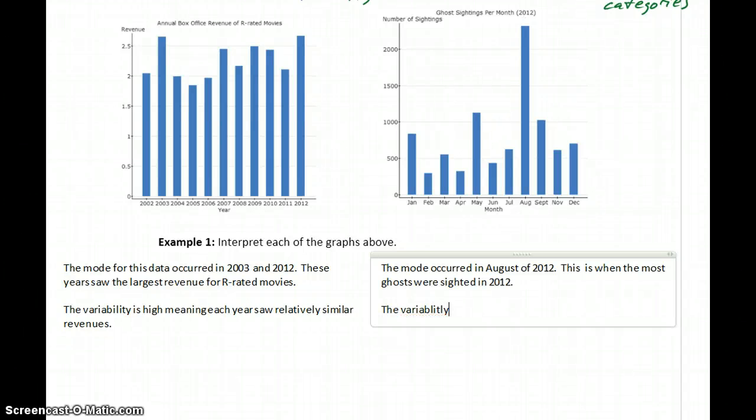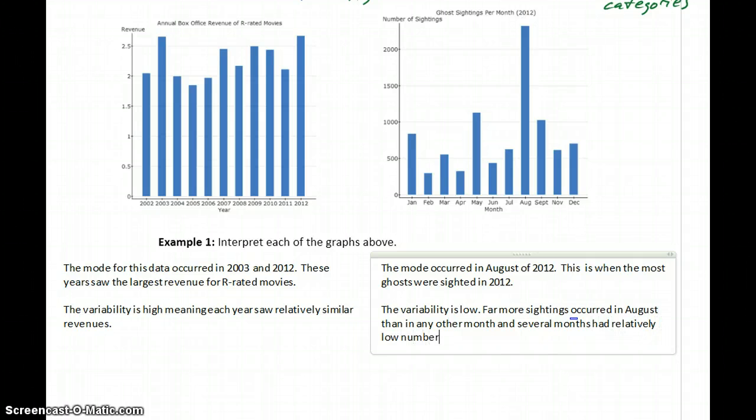In this case, we could say that the variability is low because far more sightings occurred in August than in any other month. And several months had relatively low numbers of sightings.